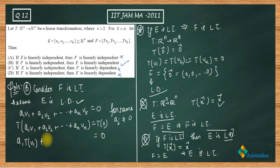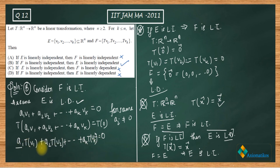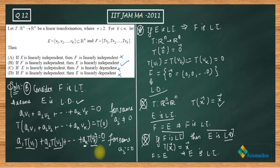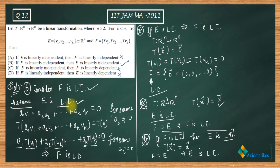Using the linearity of T, we get a₁T(v₁) + a₂T(v₂) + ... + aₖT(vₖ) = T(0) = 0, since the image of zero is always zero under a linear transformation. This means the set F = {T(v₁), T(v₂), ..., T(vₖ)} satisfies a non-trivial linear combination equaling zero, so F is linearly dependent. This is a contradiction, since we assumed F is linearly independent. Therefore E must be linearly independent, and option B is correct.